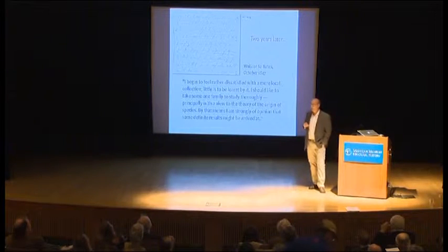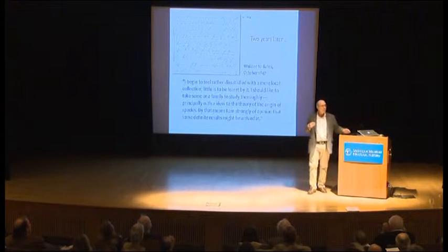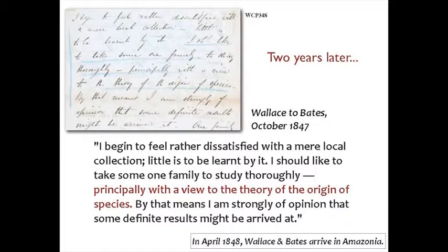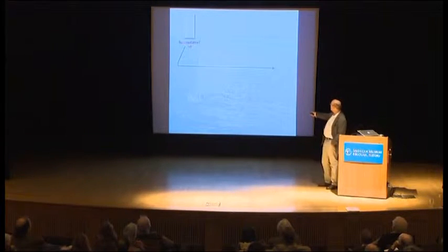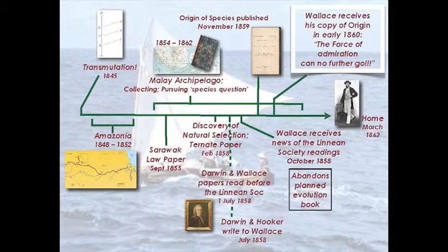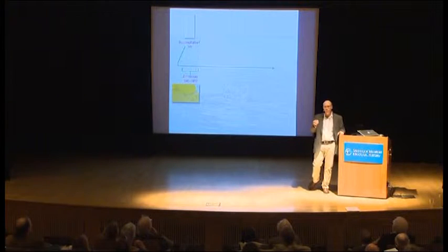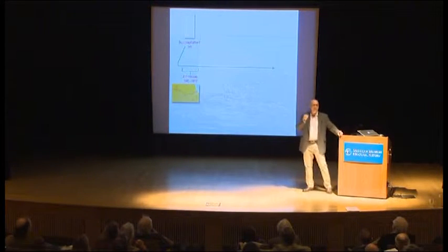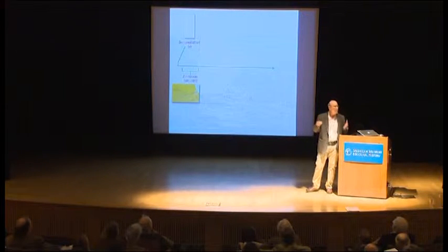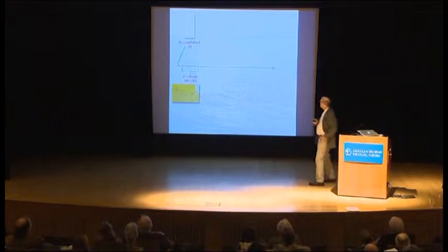When Wallace launched his bold and audacious plan to travel and collect, he aimed to collect with a purpose — with an eye towards the question of the origin of species. Transmutation came first, in 1845, not natural selection but the idea of evolution. Four years in Amazonia ended rather disastrously, and among all his specimens, observations, and papers, he had not solved the mystery — he hadn't made any progress he could identify in understanding species origins.